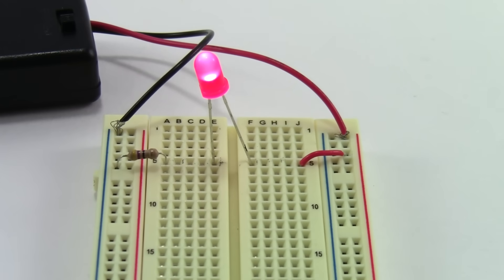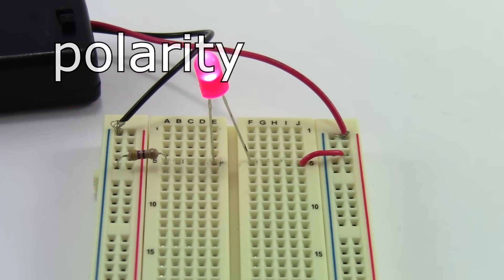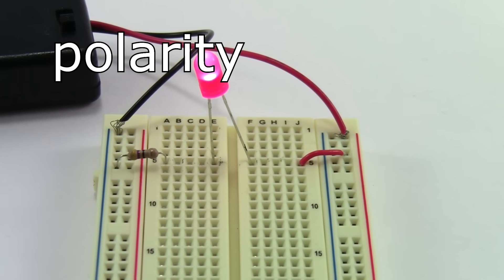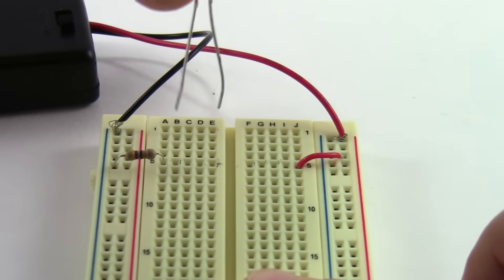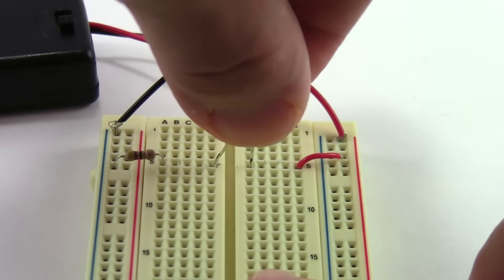The next common mistake will depend on the individual components in the project you're doing. Some components have polarity, meaning the direction they are facing matters. LEDs are a great and very common example. Notice how if I grab the LED and flip it around, it doesn't stay lit.